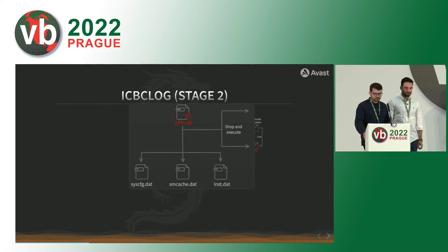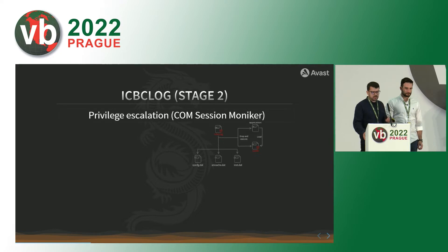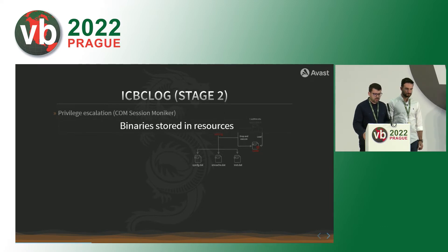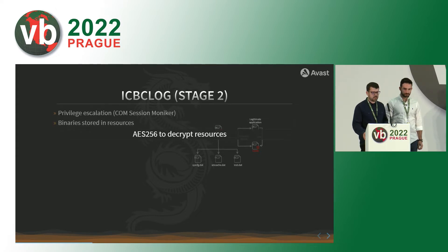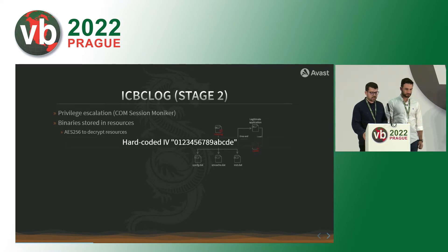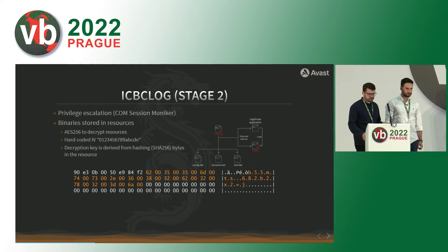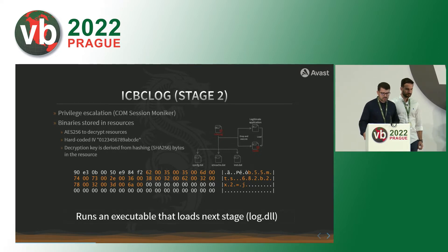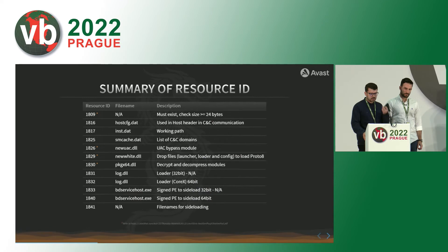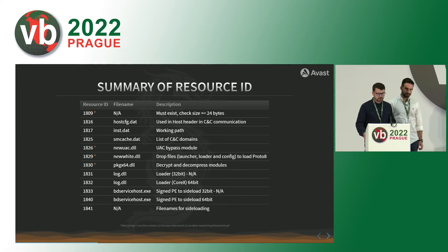Let's recap stage two. In this stage, they used the COM elevation moniker for privilege escalation on the system. Binaries are also stored in the resources, encrypted with AES-256. The IV is hard-coded in the binary and the decryption key is derived from hashing multiple bytes in the resource at offset eight. After that, this stage executes the next one. Here is a summary of multiple resources we've seen from this stage.